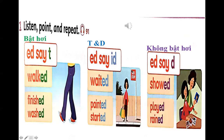Vậy thì các bạn hãy listen, point và repeat lại. Listening 91 — listen and point. ED say /t/: walked, walked. Finished, finished. Washed, washed. ED say /ɪd/: waited, waited. Hinted, hinted. Started, started. ED say /d/: showed, showed. Played, played. Reigned, reigned.